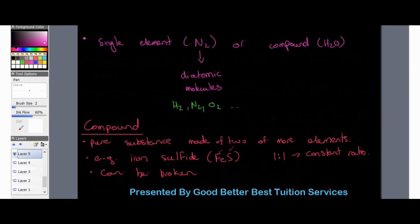A molecule can exist either as a single element or as a compound. H₂O is a compounded molecule because it consists of hydrogen and oxygen bonded together to give us water. A molecule can also be a single element — for example, nitrogen exists as N₂, a diatomic molecule. It just needs to exist as N₂ rather than N on its own.